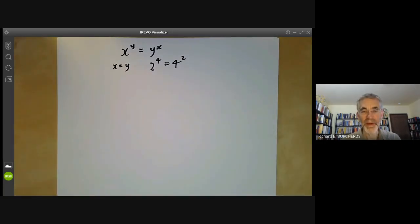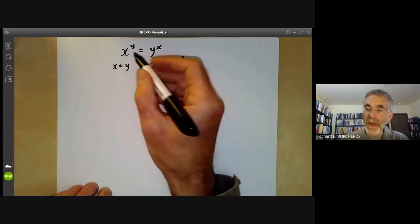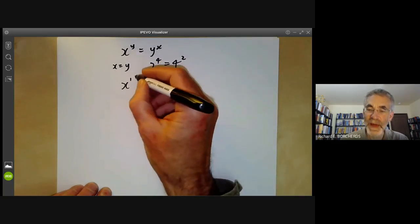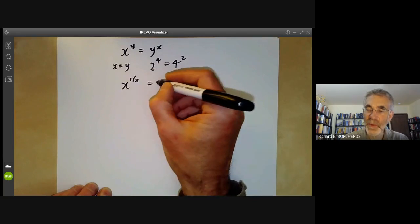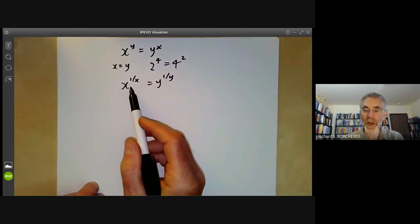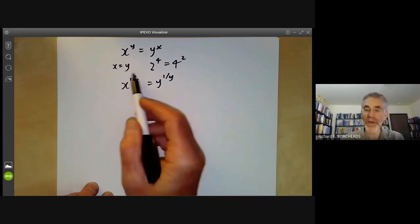And in order to find all other solutions, I'm going to give two different methods. So the first method, let's just raise both sides to the power of one over xy. Then we find x to the one over x equals y to the one over y. So we've got to find values of x and y that have the same value of this function.